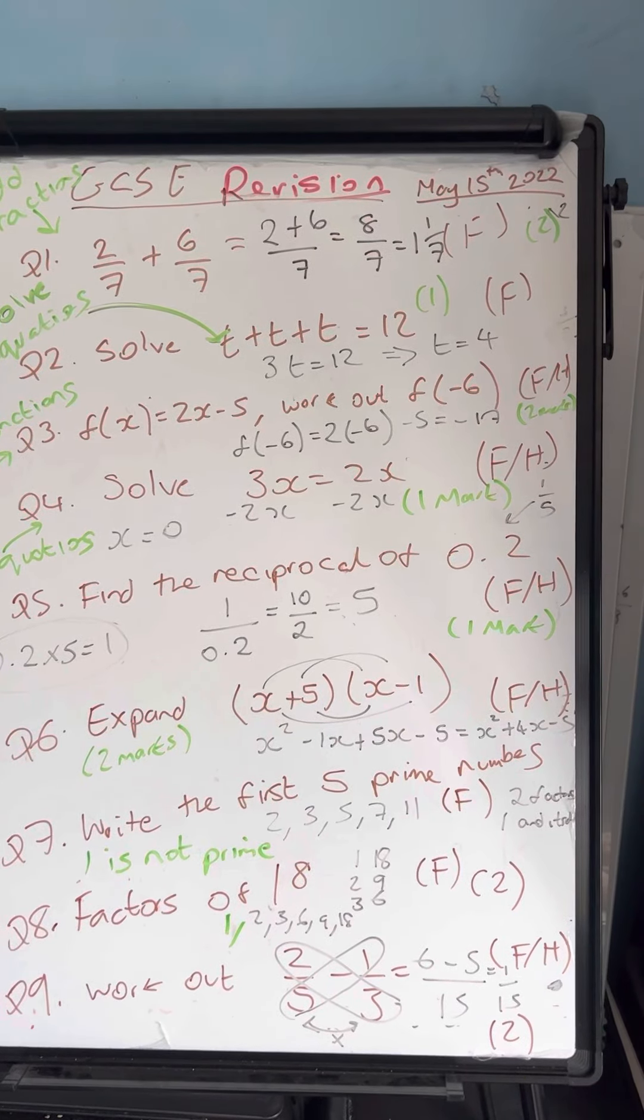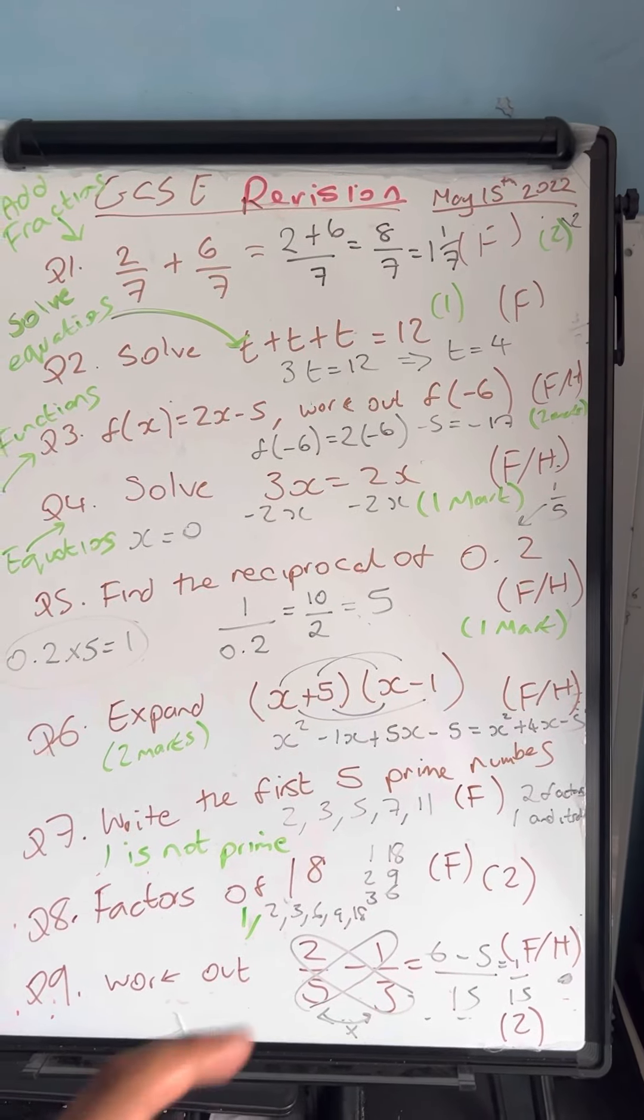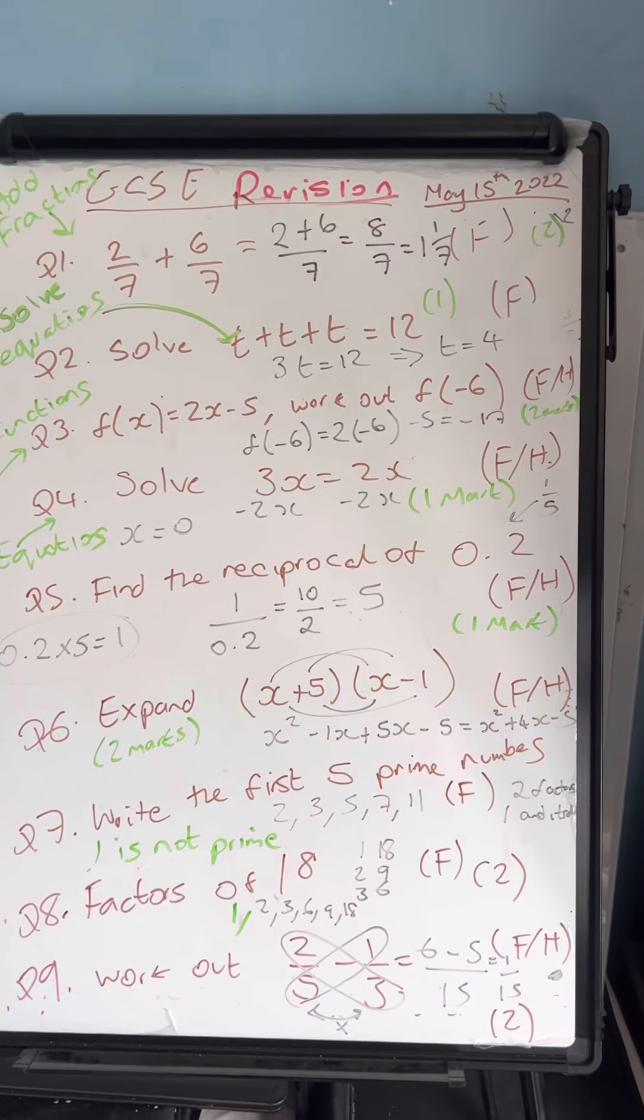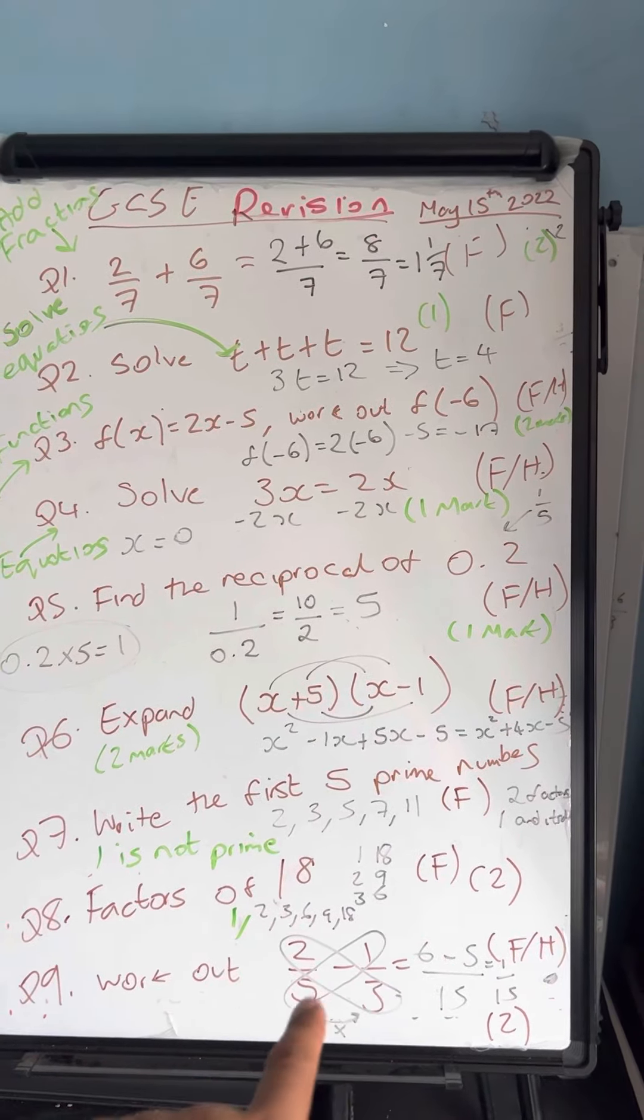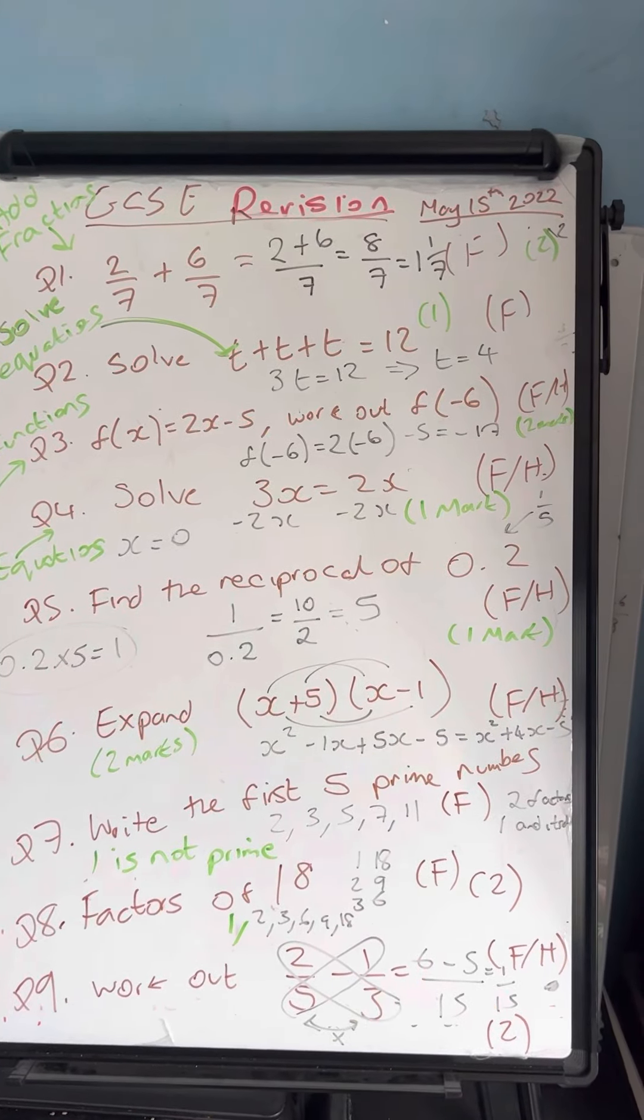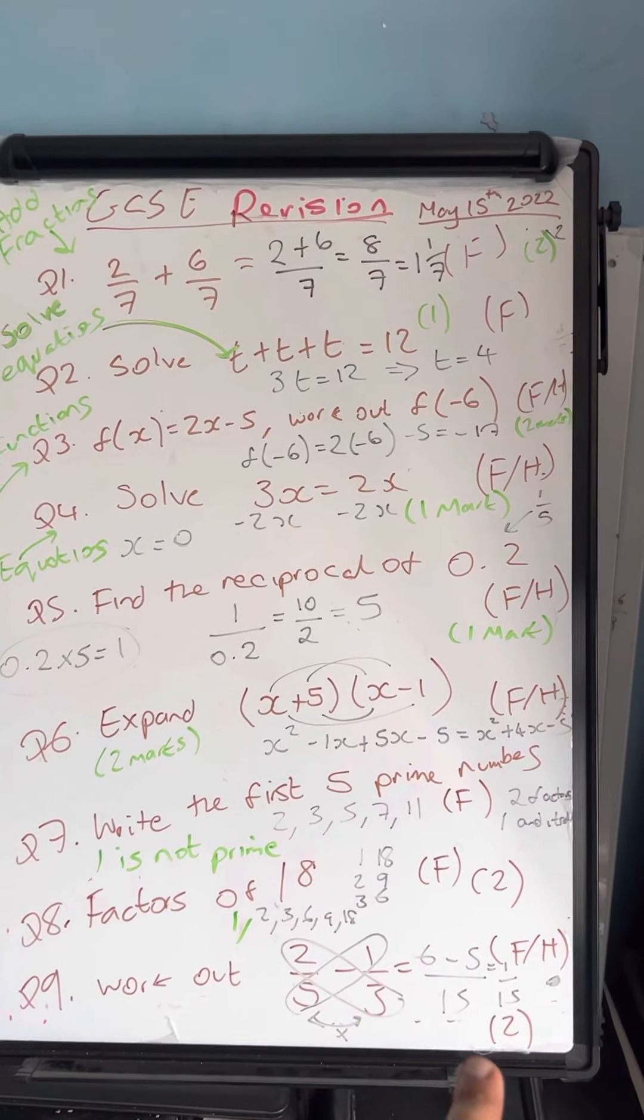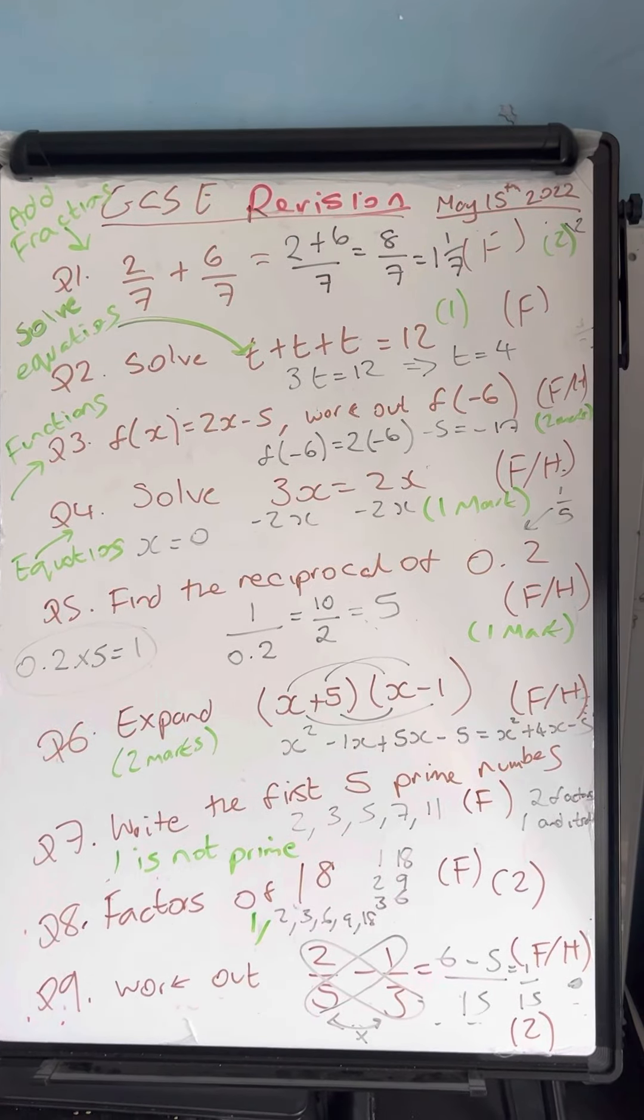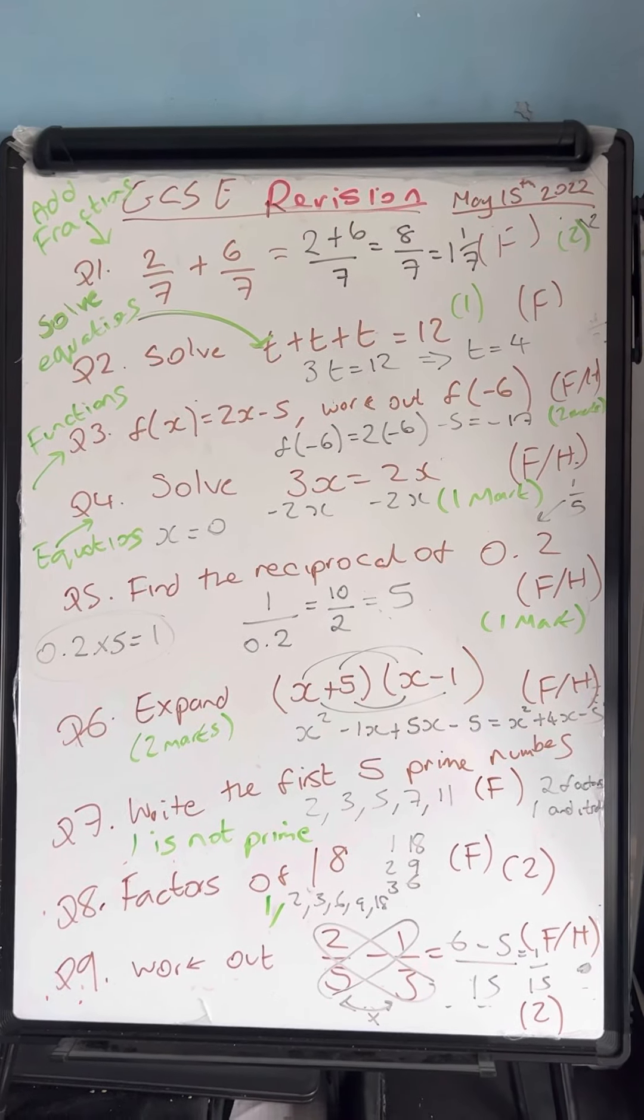Last question. Work out two fifths minus one third. Writing it under a common denominator of 15: I do 3 times 2, which is 6. 5 times 1, which is 5. 6 take away 5, all over 15, is equal to 1 fifteenth. That's my answer for that question.